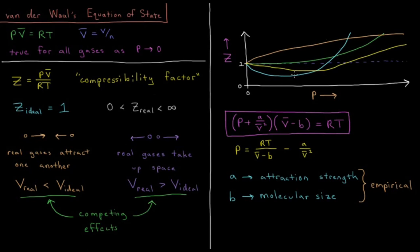The van der Waals equation of state says that the pressure plus this parameter A over the molar volume squared quantity times the molar volume minus this parameter B is equal to RT. So now PV̄ = RT has been replaced by (P + A/V̄²)(V̄ - B) = RT.